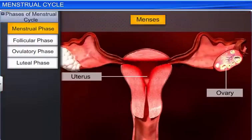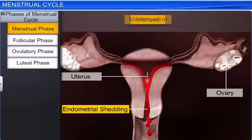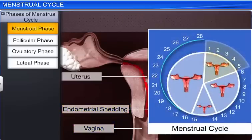During the menstrual phase, the endometrial lining of the uterus and its blood vessels break down and mix with blood, mucus, and other cell debris to form menses. The menses are discharged through the vagina as menstruation, or menstrual flow, which lasts for 3 to 5 days from the beginning of the menstrual cycle.